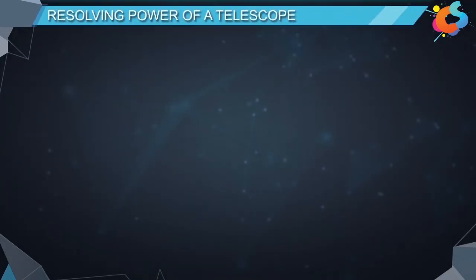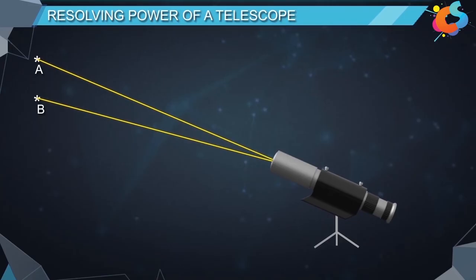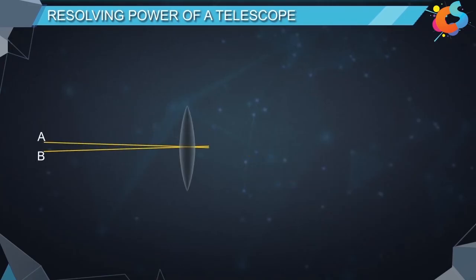Resolving power of a telescope. When two distant objects A and B are observed with the help of a telescope, the rays from these objects pass through the lens making an angle alpha at the lens. The rays undergo diffraction and produce image on the screen.